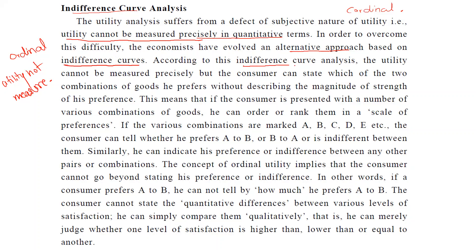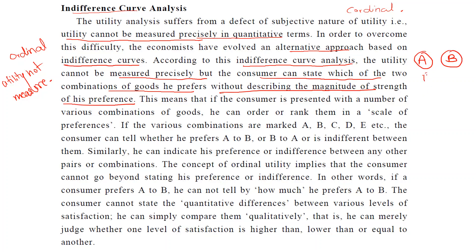According to indifference curve analysis, the utility cannot be measured precisely, but the consumer can state which of the two combinations of goods he prefers without describing the magnitude or strength of his preference. For example, there are two combinations of goods, A and B. The consumer can say which combination he would prefer — A or B — which is his first preference. If A is his first preference and B is second, he does not tell the magnitude of why he chose A over B.